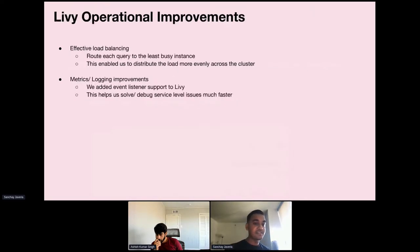Lastly we also made a ton of operational improvements on Livy itself. The first one was effective load balancing. Now Livy is a stateful service and our clients use HTTP polling mechanisms, so classic application load balancers are difficult to add on top. We implemented our own load balancing algorithms on the application level by routing each query to the least busy instance in a round-robin fashion. Here busyness is defined by the number of active sessions running on a particular Livy instance. This enabled us to distribute the load fairly evenly across the cluster.